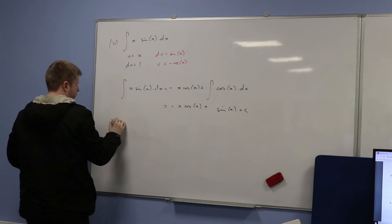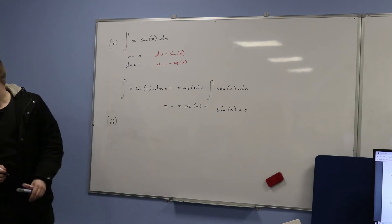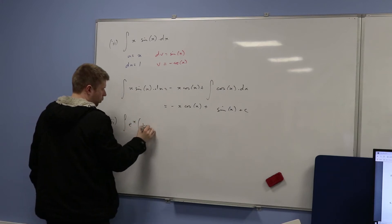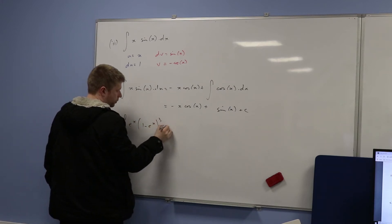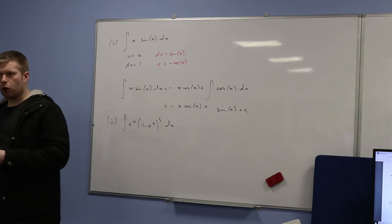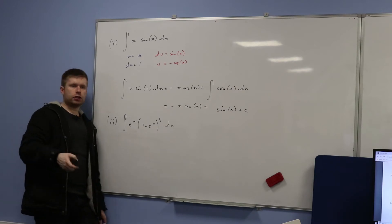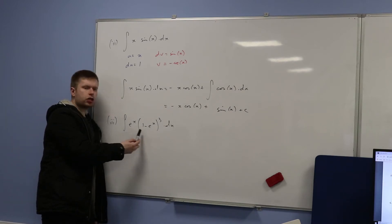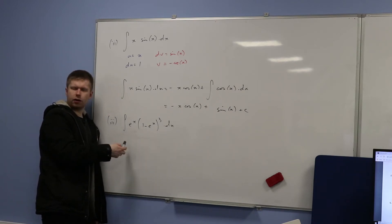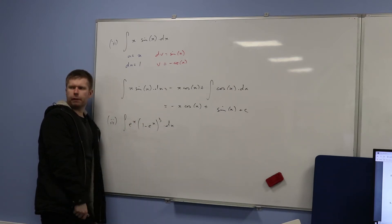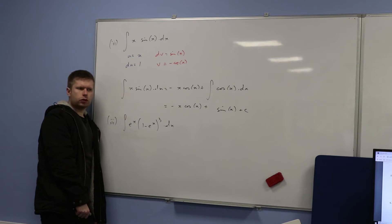Let's have a look at part three. Part three is the integral of eˣ times (1 − eˣ)³ with respect to x. Now, I put this one in to throw you off a little bit. Ordinarily you'd say this is the integration of two functions that don't look particularly nice, so surely you'd think you have to use by parts here. But you don't.